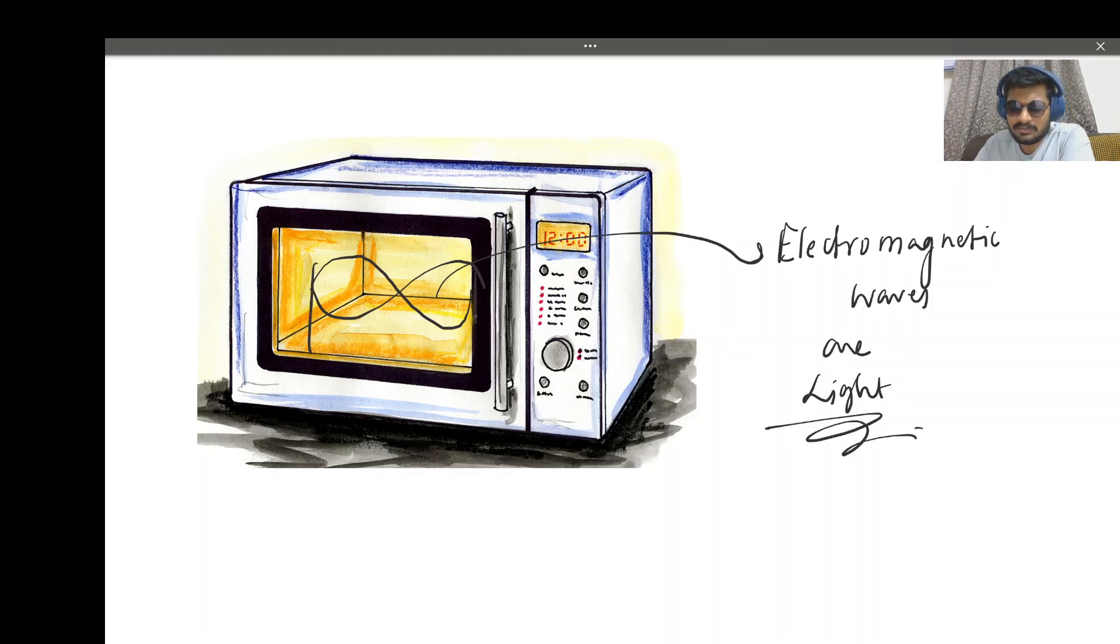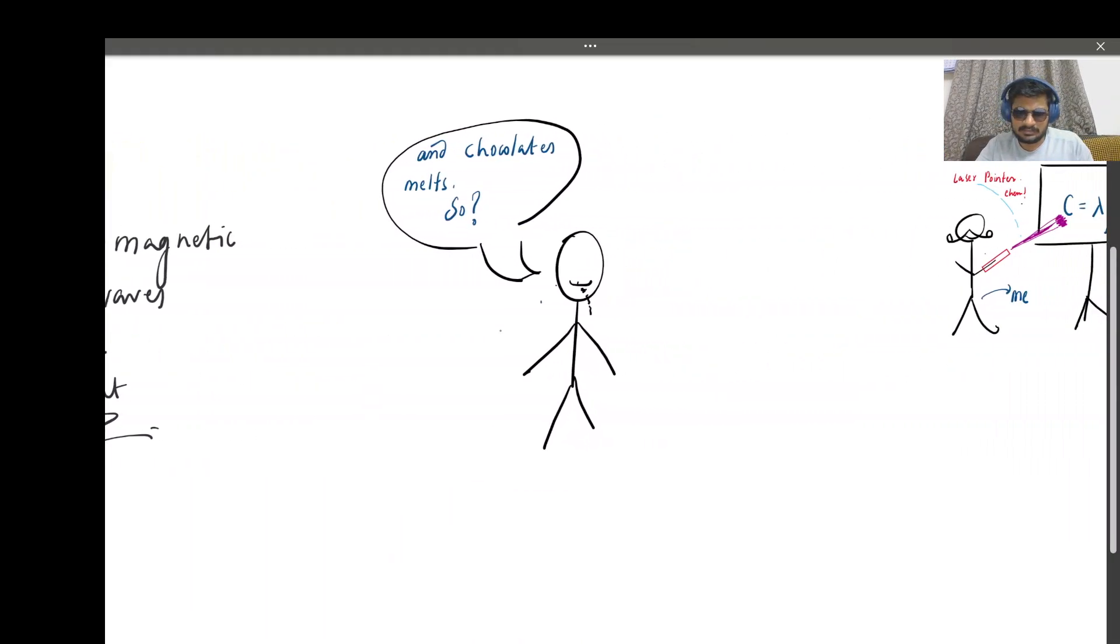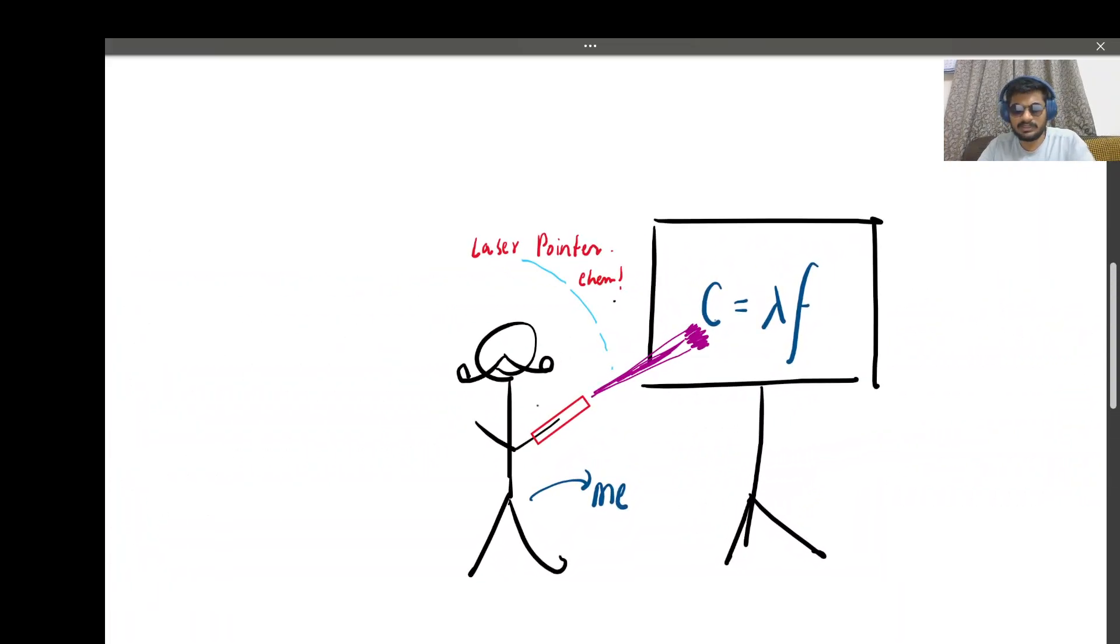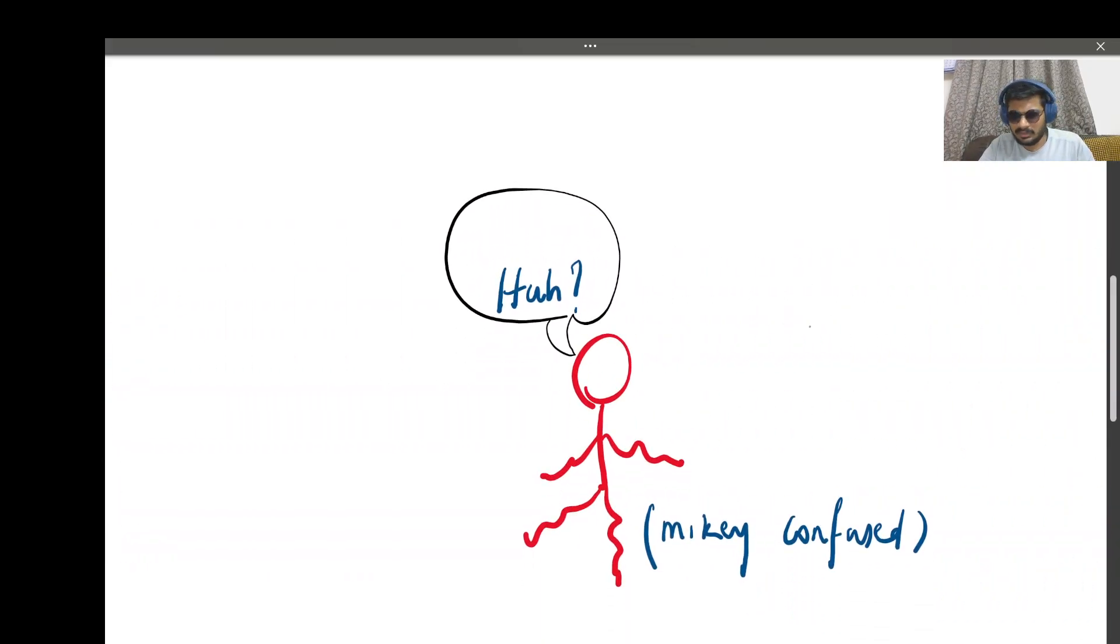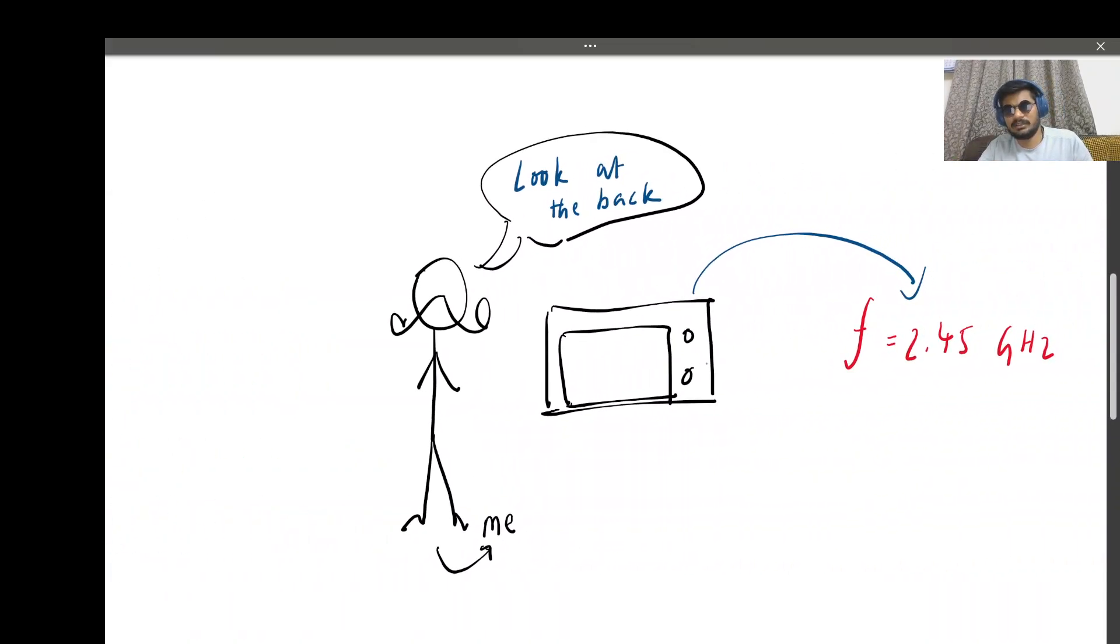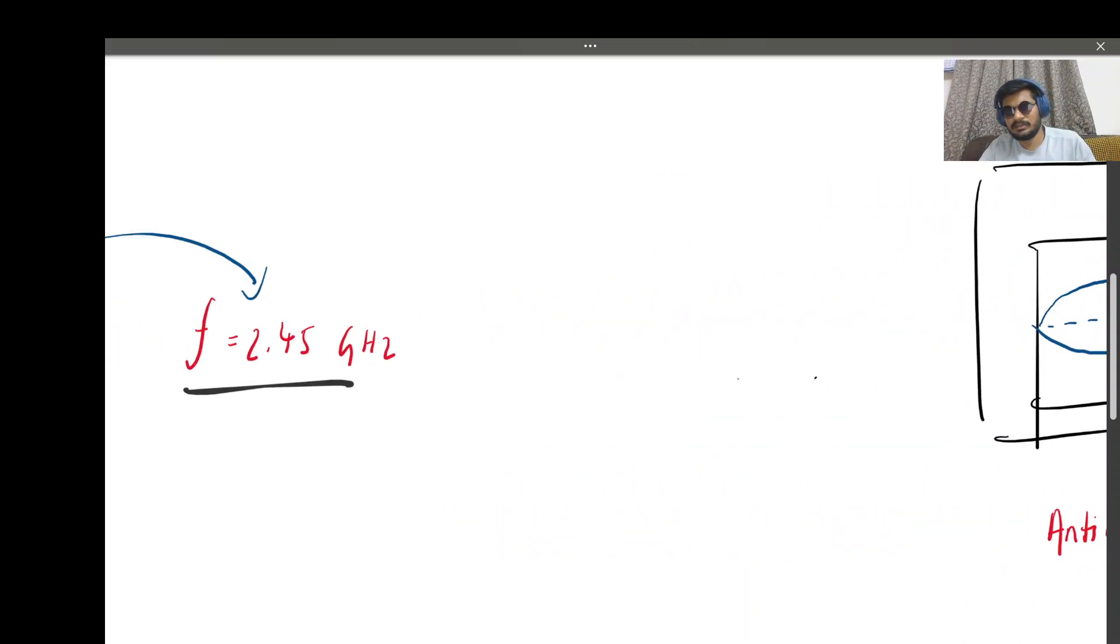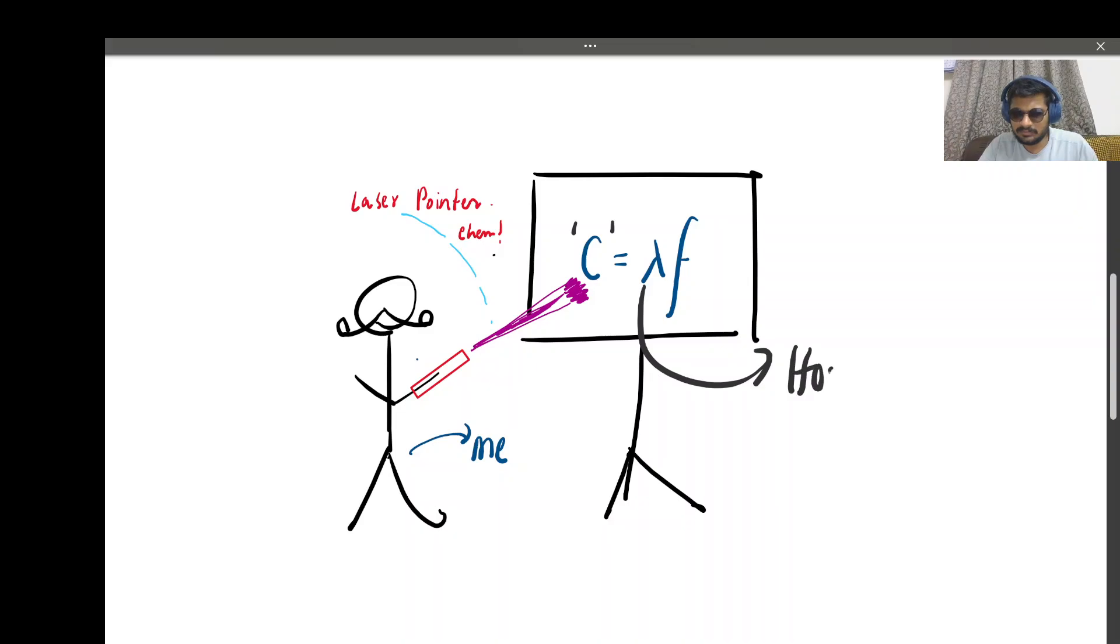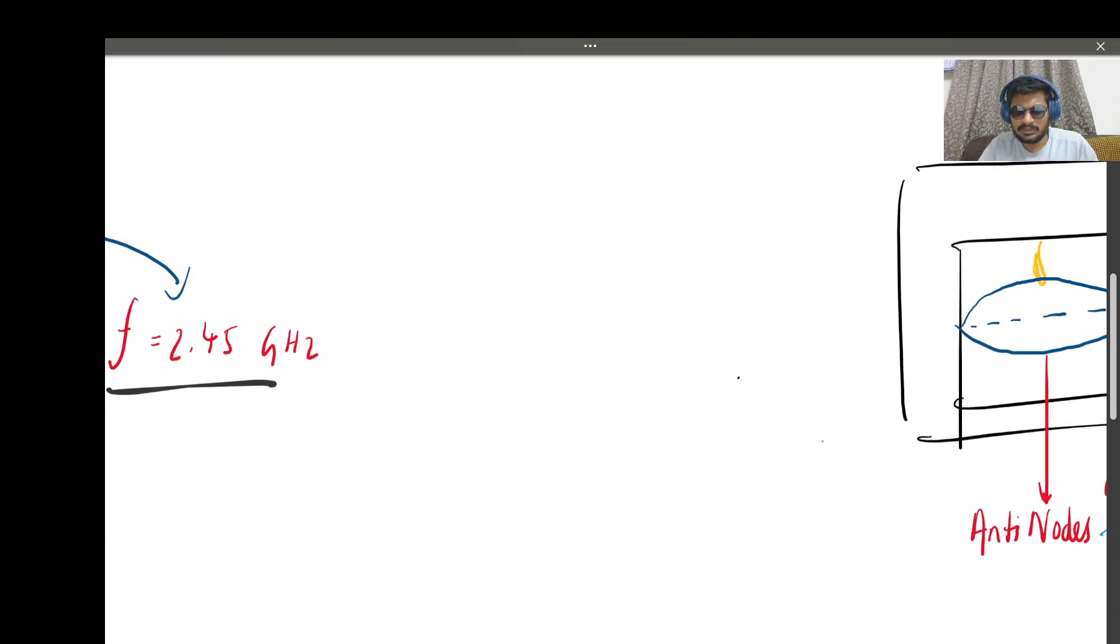We have the formula: speed equals lambda times f. Look at the microwave's backside - you'll find that the frequency of the waves in it is equal to 2.45 gigahertz. So now that we have the frequency, all we have to find is lambda.